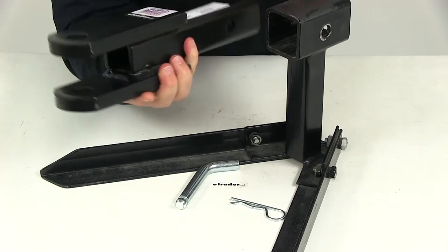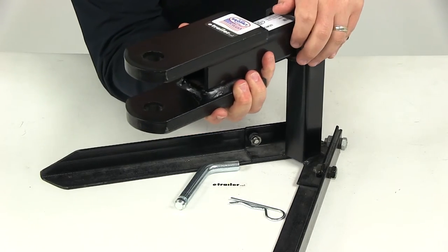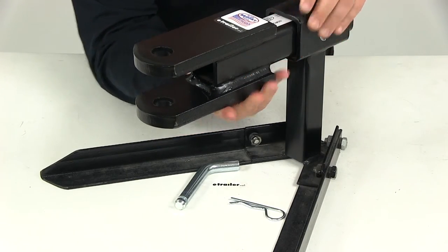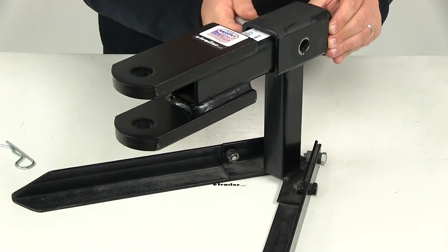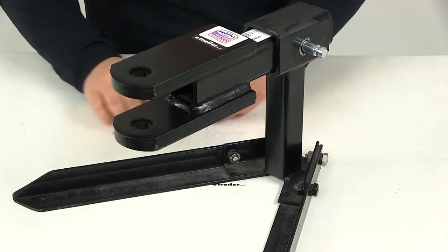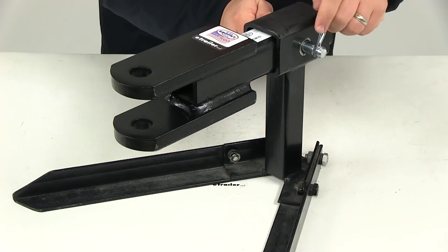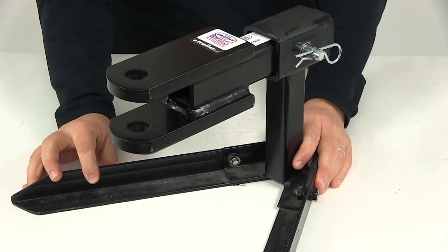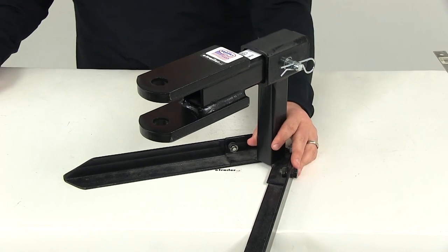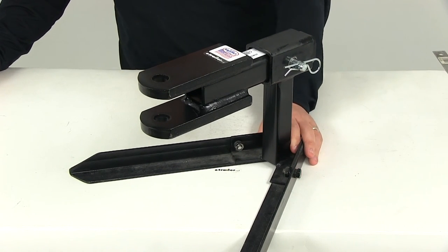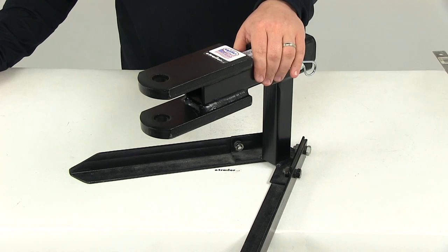All you have to do is take the shank, slide it into your two-inch by two-inch trailer hitch receiver, line up your pinholes, and insert your hitch pin and clip or your hitch pin and lock. That's going to do it for our review of part number CM20. This is the Brophy clevis mount for two-inch trailer hitches, rated at 6,000 pounds.